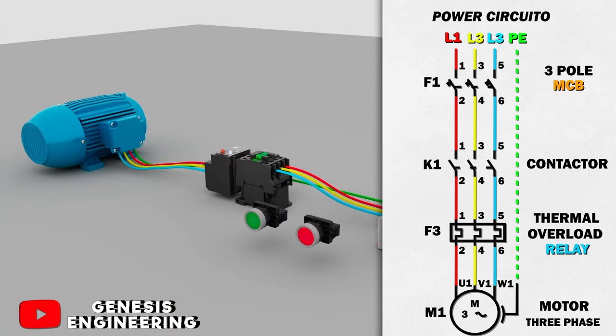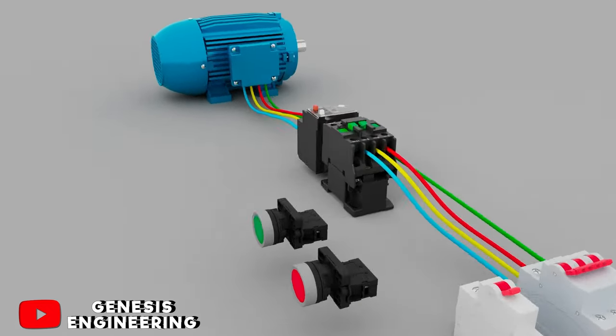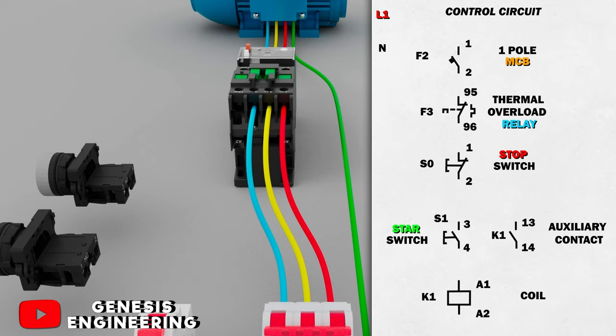Now let's make the command circuit. For each circuit it is necessary to have a miniature MCB circuit breaker. For the power circuit we put a three-pole MCB and for the control circuit we put a one-pole MCB. We start the command circuit by connecting the neutral conductor directly to A2 of the contactor.